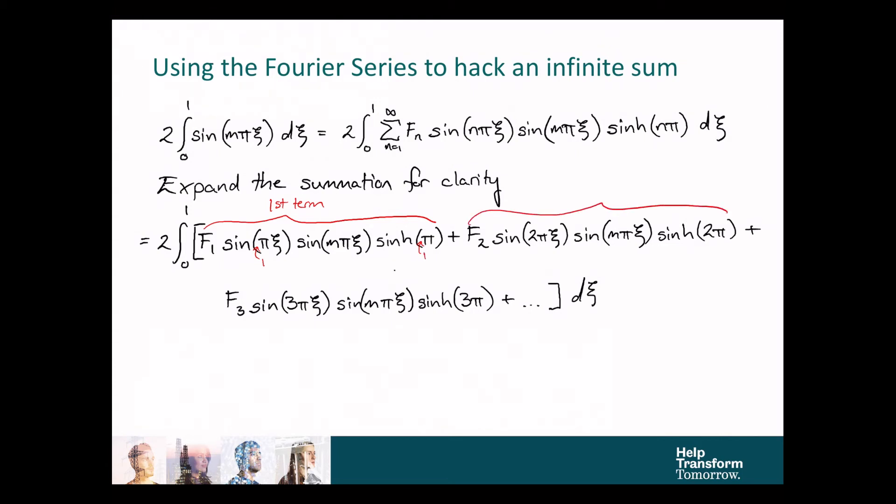For the second term, similarly, we're looking at the second coefficient, constant of integration, and n equals 2. So, we replace n equals 2 into the two places where n appears in the formula, but that m remains, because we're not summing over m, we're summing over the index n. And, same for the third term, and so on, all the way to infinity. And, the addition of an integral is commutative, so we can either add everything in this argument and then integrate, or we can integrate each individual expression and then add them all together, we'll get the same result.